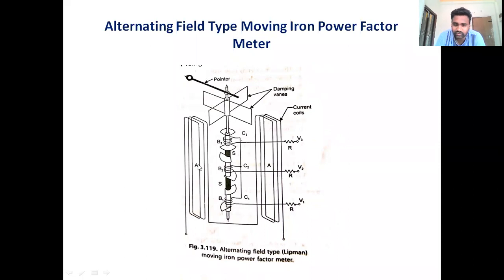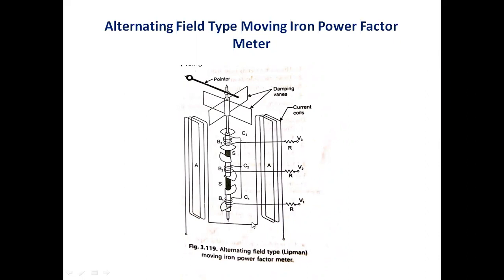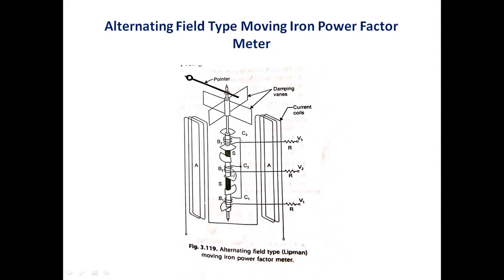The current coils — elements A — are split into two halves. One half is on the first side of the moving system and one on the second side of the pressure coil system. The spindle of the moving system is connected to the damping vanes and also to the pointer.